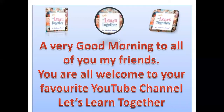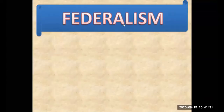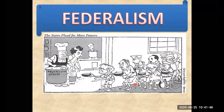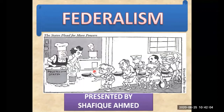Good morning, my dear friends. This is Shafiq Ahmad and you're all welcome to your favorite YouTube channel. Let's learn together. Welcome back to class. Our next chapter of Civics, that is Political Science, is Federalism. This chapter is quite interesting because it deals a lot about our country. You can see in the photograph here — the state is pleading, asking the central government to give more powers. That is one feature of federalism, where the state government has to look for powers from the central government.